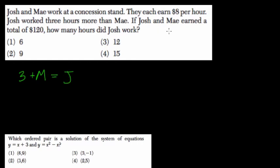If Josh and Mae earned a total of $120, so Josh plus Mae equals 120, how many hours did Josh work? Well, since you have these two equations, the easiest way is to substitute this into this right here.